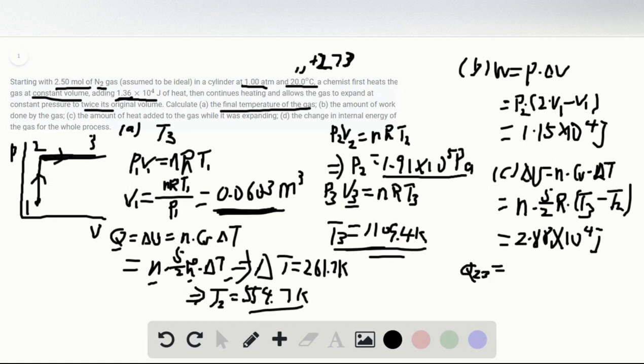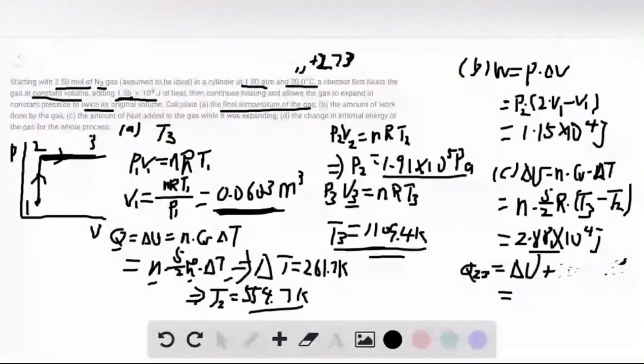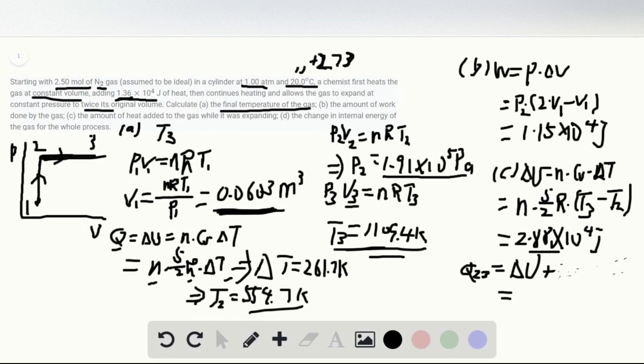Then we figure out the heat in process 2 to 3. Q for 2 to 3 simply equals this delta U plus... oh wait, I'm sorry, I should add the work, not the heat from process 1 to 2. Because this is Q for process 2 to 3. The work is over here. So the result is 4.03 times 10 to the fourth joules.